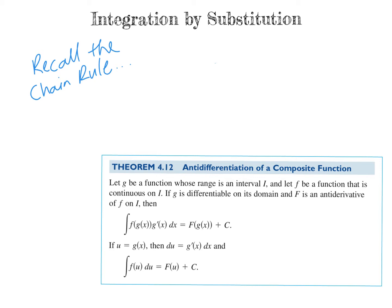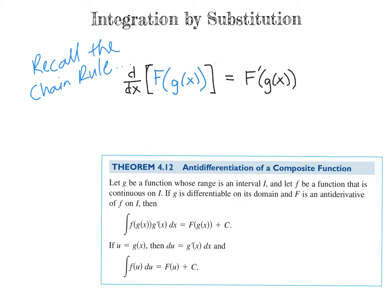So we want to recall the chain rule, which was how we took the derivative of a composite function. Recall that a composite function is one function inside another — f of g of x — so we had an outside function and an inside function. If we take the derivative with respect to x, we get f prime of g of x, and then the chain rule says we multiply by the derivative of the inside function, g prime of x. That is our chain rule.